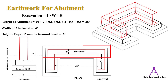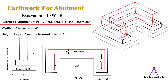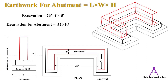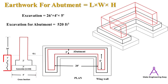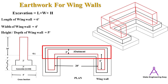To start the project, we need the quantity estimation of earthwork in excavation of the abutment and two wing walls. First, we find the excavation of the abutment. We need the abutment length, width, and height from ground level to the base. The given inner distance between two wing walls is 20 feet. Adding two-feet brickwork on each side plus 0.5-feet offsets gives 26 feet total abutment length. Width for excavation is four feet and height is five feet. Multiplying 26 × 4 × 5 gives 520 cubic feet of excavation for the abutment.